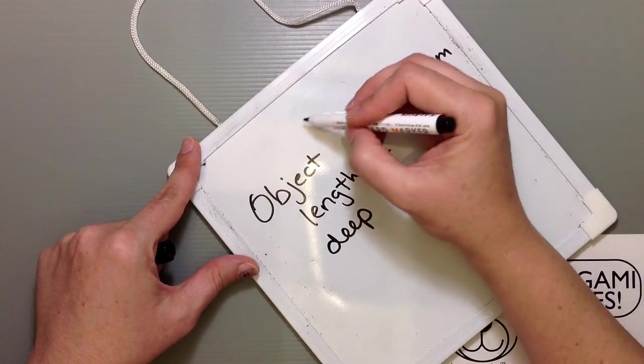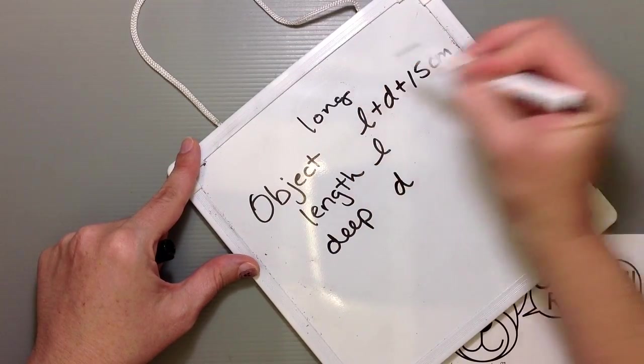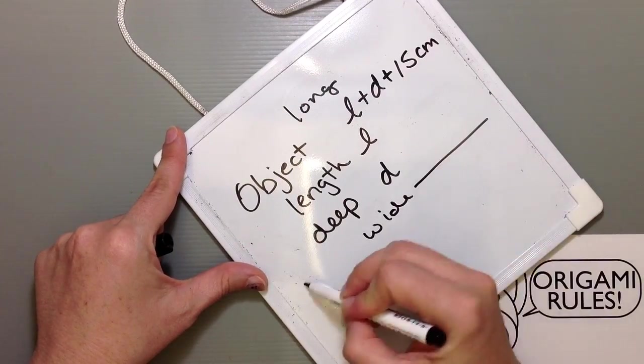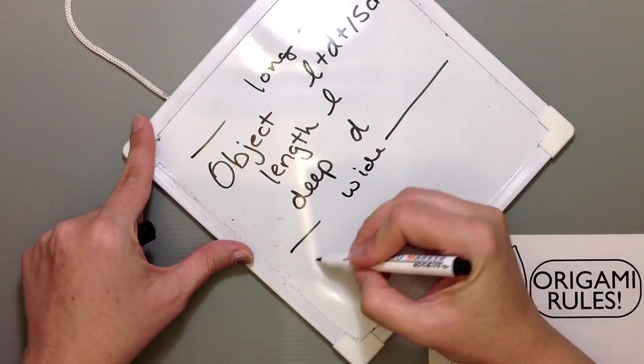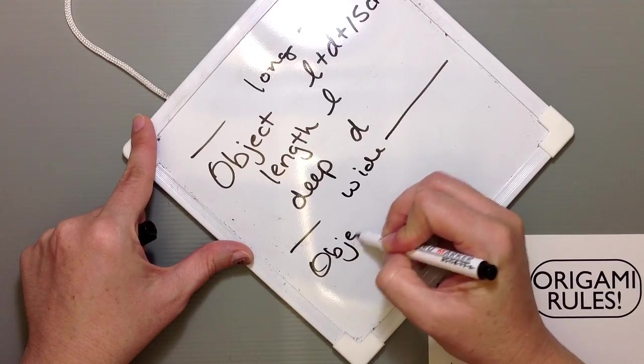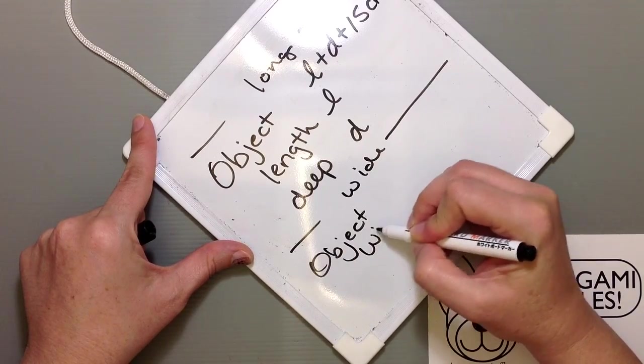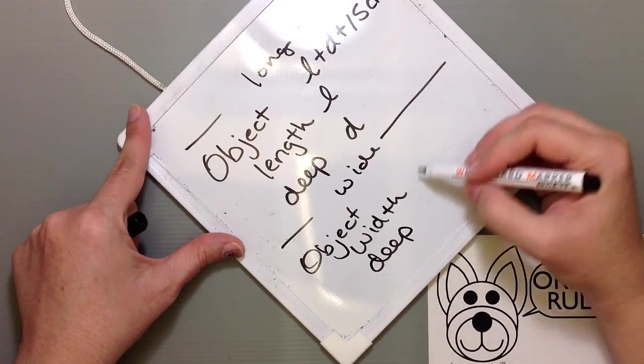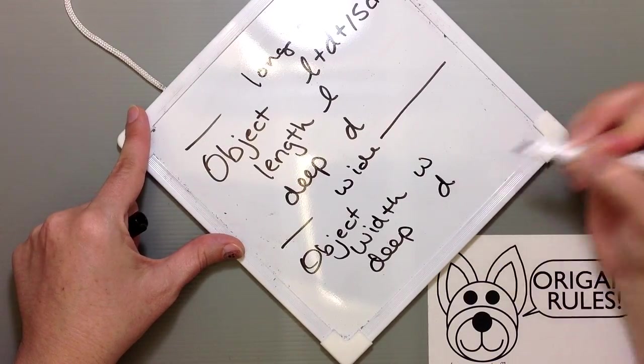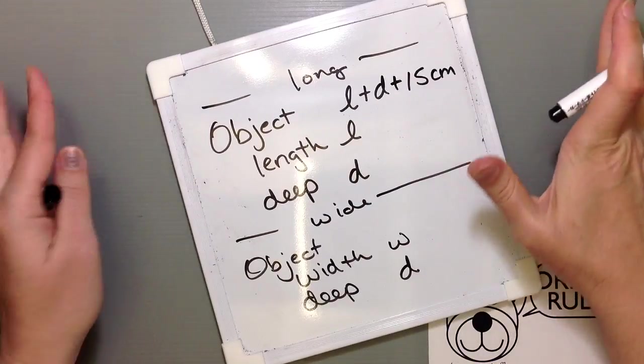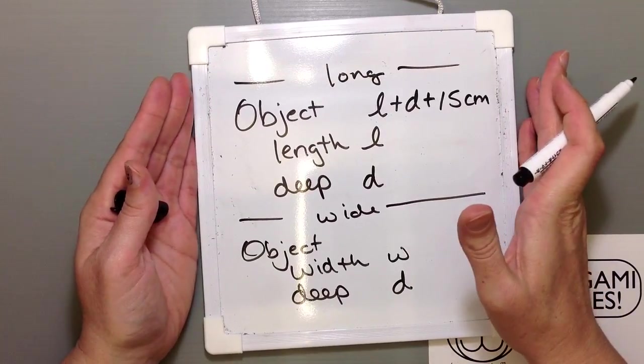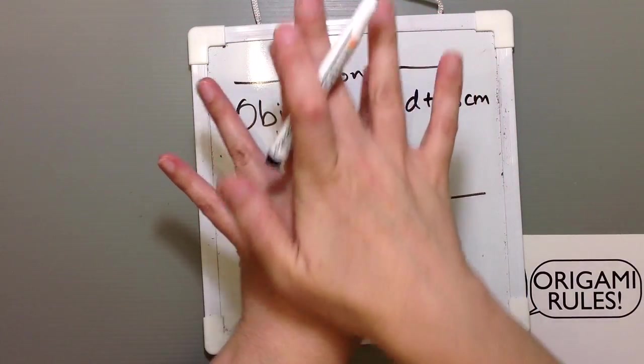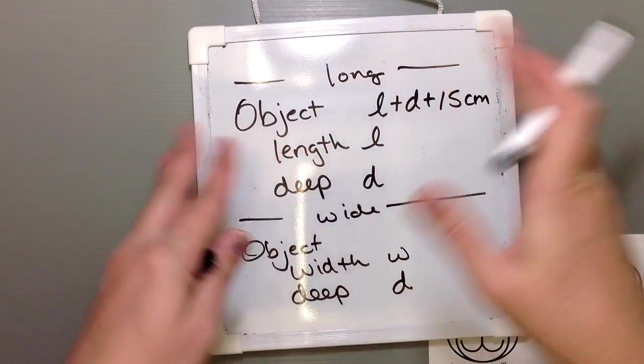And then how wide your paper should be is to be considered here with the object's width. And again you need to consider the depth again. So this is W and this is D. The width we need to consider, of course we're trying to wrap something up, so we need how big it is times two plus a little extra so that things can connect and seal off at the top.